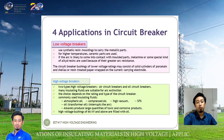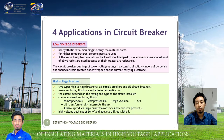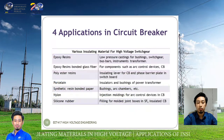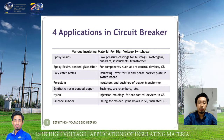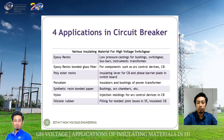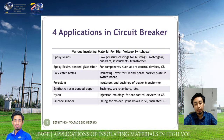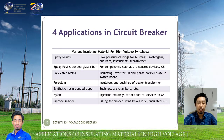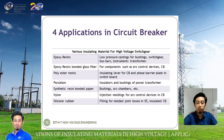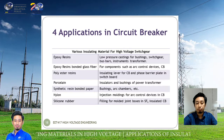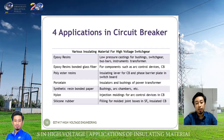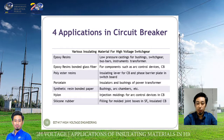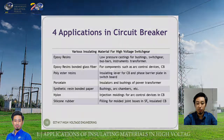This table shows the various insulating materials for high voltage switchgear. Based on this table, the materials include epoxy resin, epoxy resin bonded glass fiber, polyester resin, porcelain, synthetic resin bonded paper, nylon, and silicone rubber — each with different applications. Thank you very much. Assalamualaikum warahmatullahi wabarakatuh.